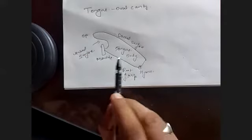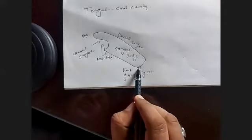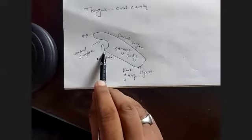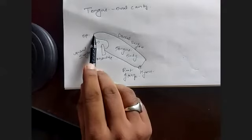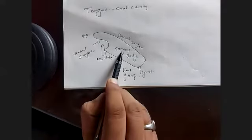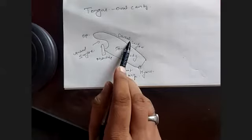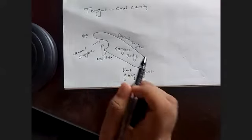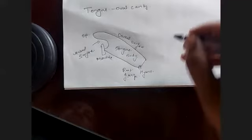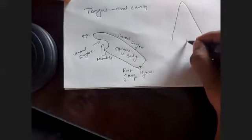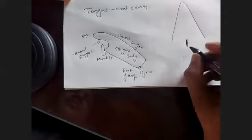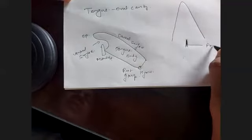The tongue has a root which is attached to the hyoid and mandible, a tip, and a body with two surfaces - dorsal surface above and ventral surface below. If you look at the ventral surface from below, we see the ventral surface is attached to the floor of the mouth by a frenulum.